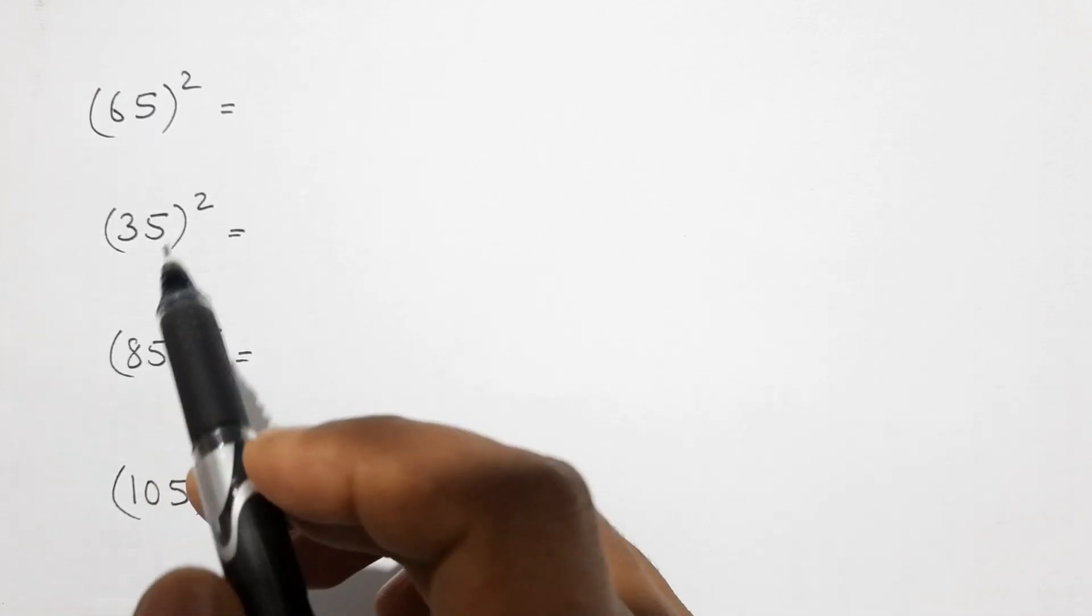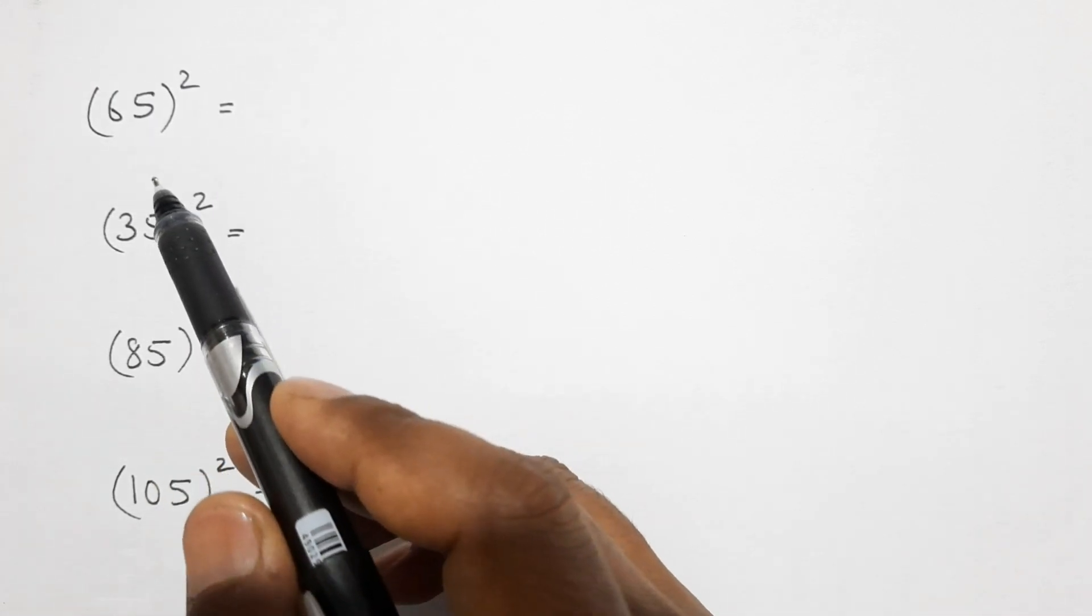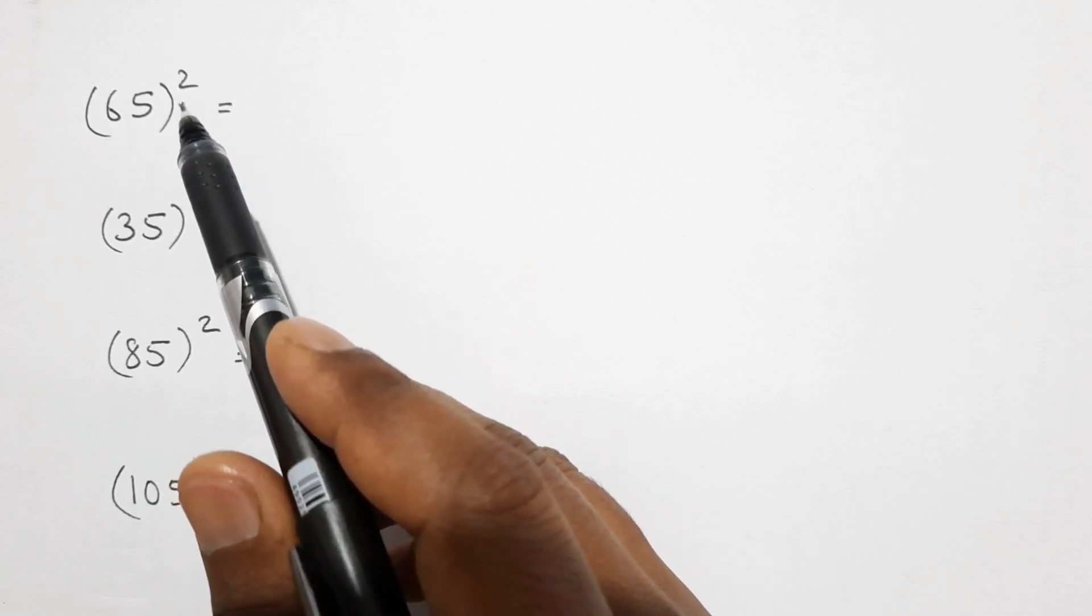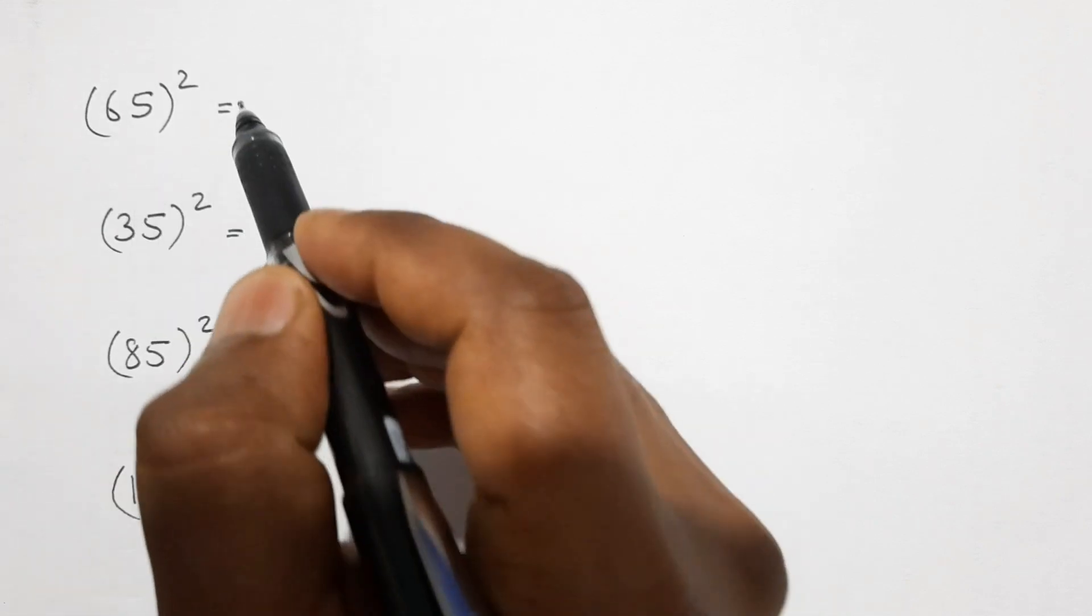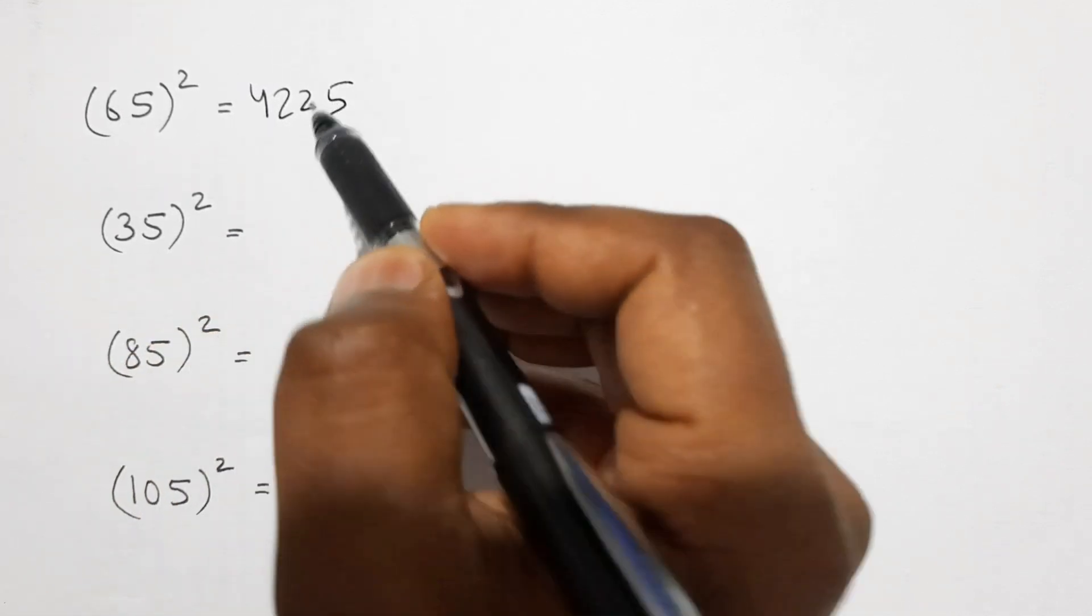Okay, so let's go. Here I have some numbers. I am going to find the square of these numbers in just a second. So let's go. Here it is.